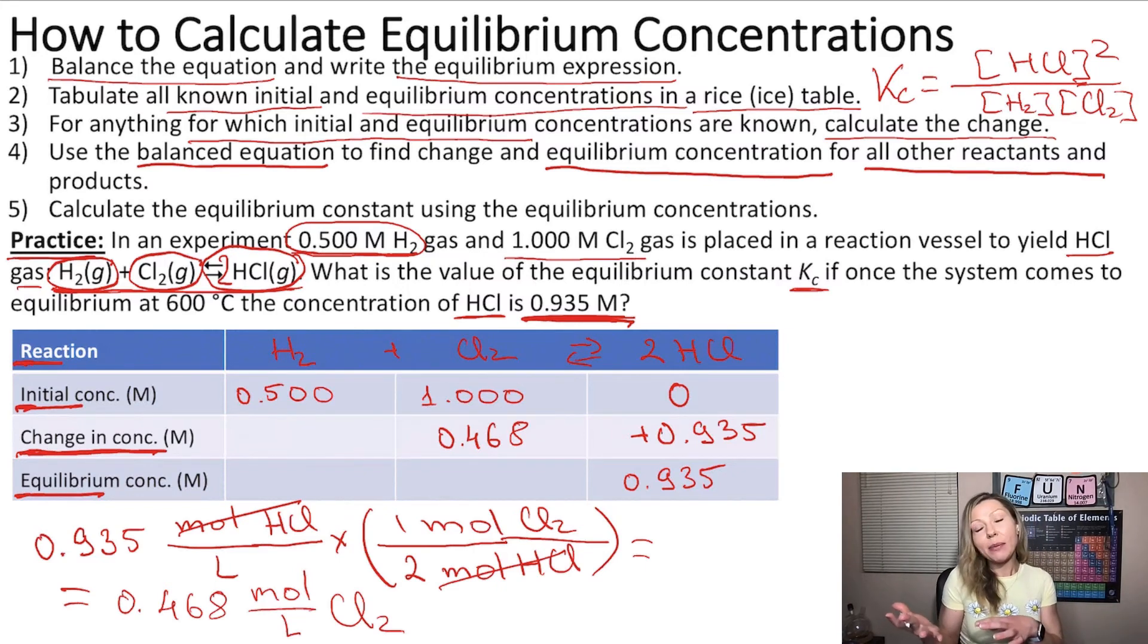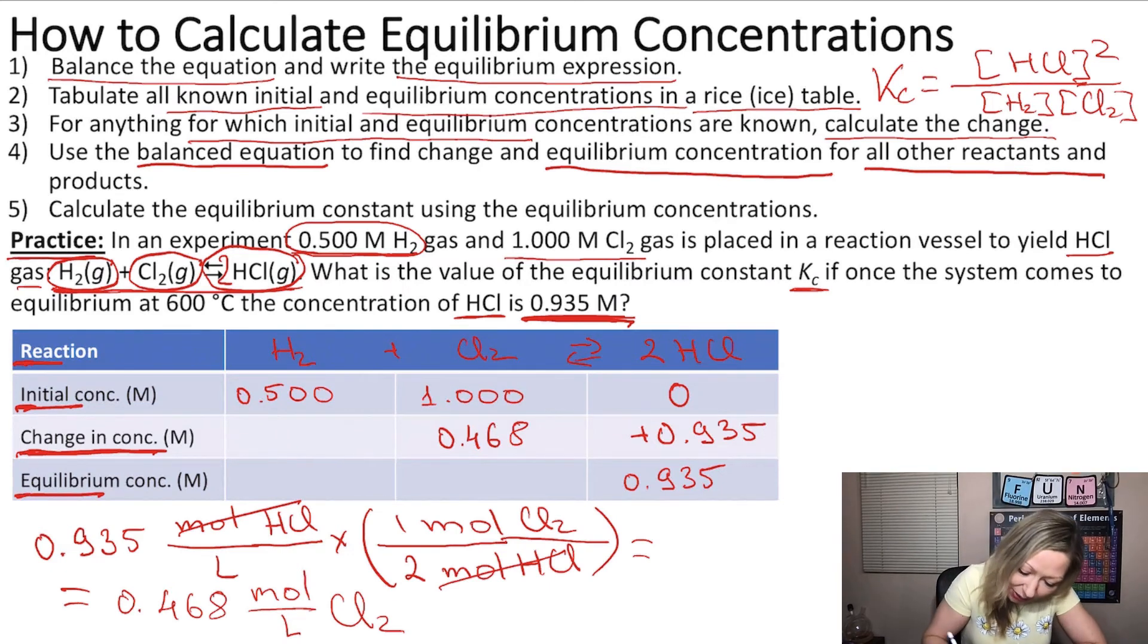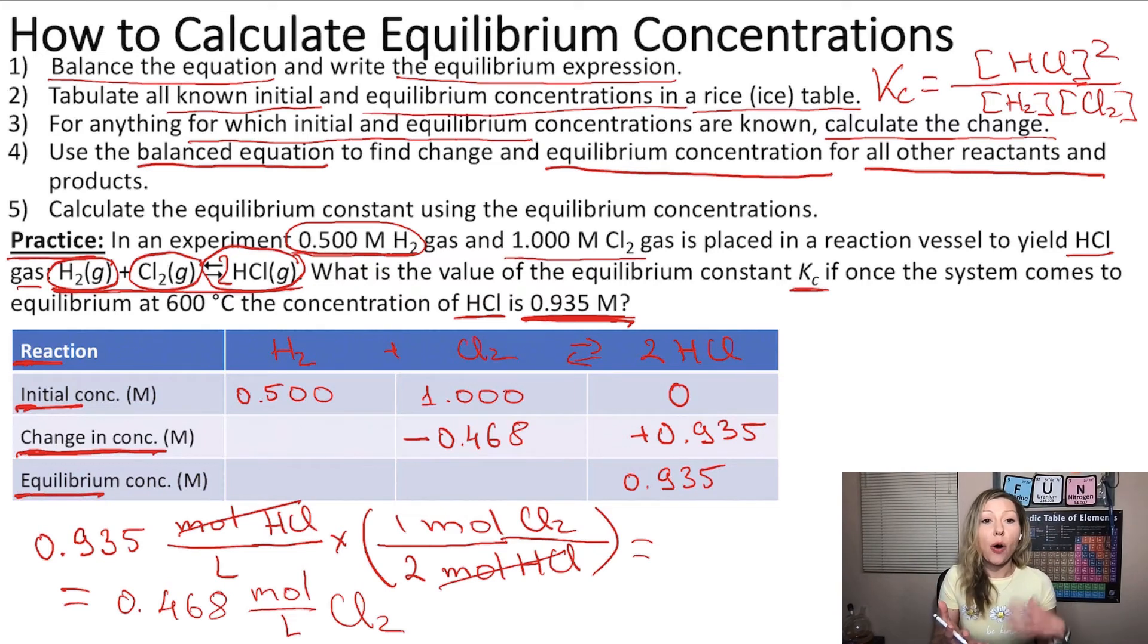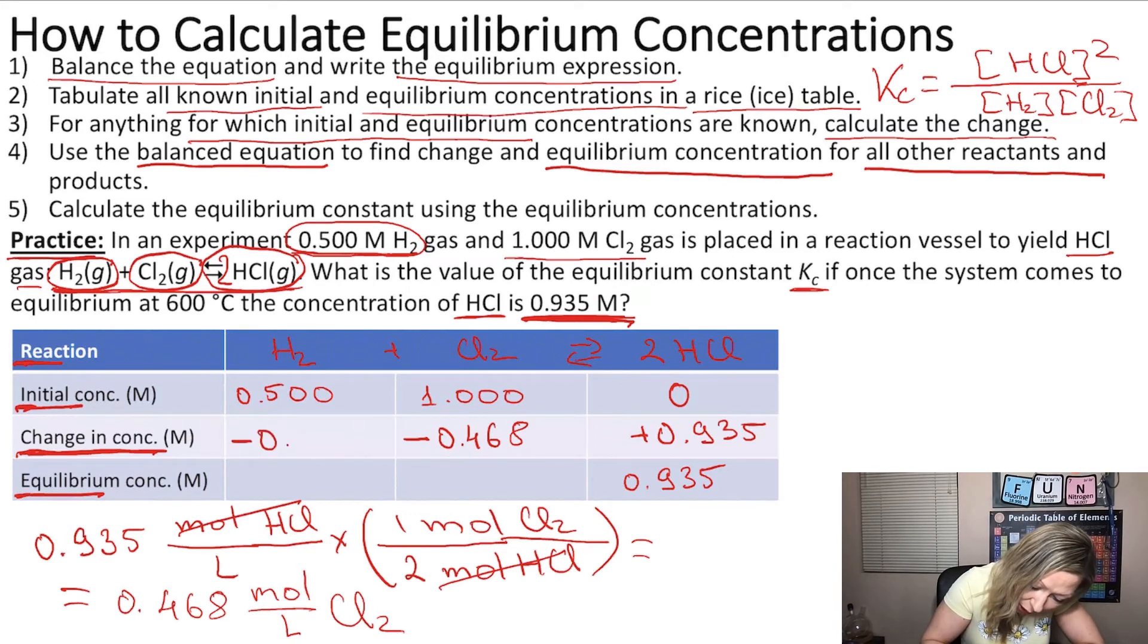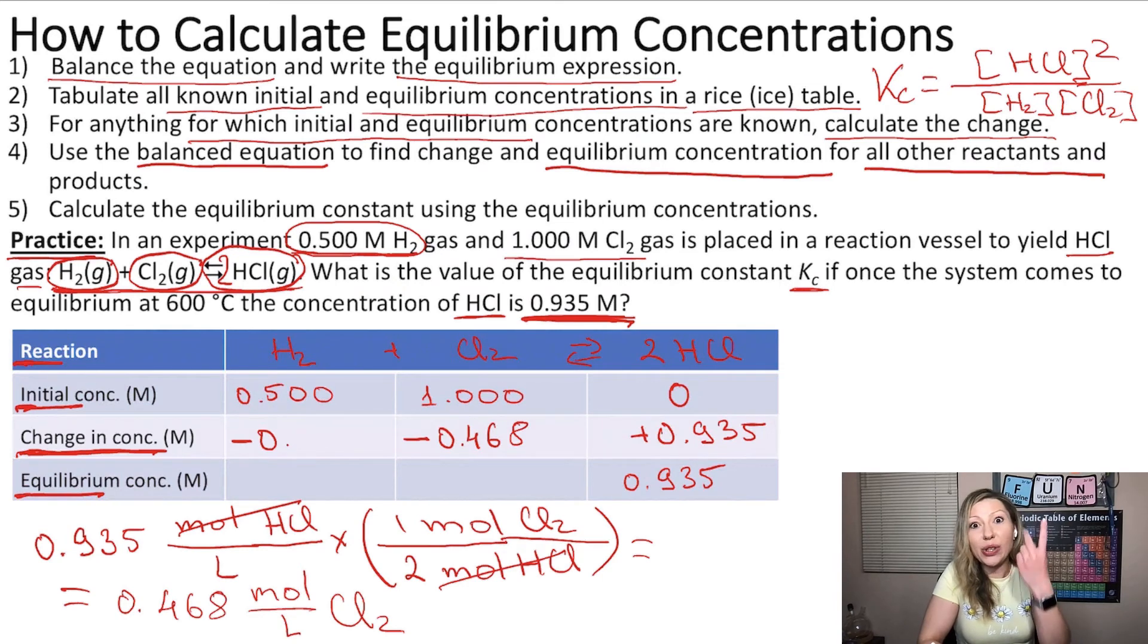Did I add that amount or did I use that amount up? I used it up. So that's gonna be with a negative sign. And because the ratio of H2 and Cl2 is 1 to 1, I can simply add the same value right here. Because I know that when I use up 1 mol of Cl2, then also 1 mol of H2 will react. So if I used up 0.468 mols of Cl2, then 0.468 mols of H2 reacted.